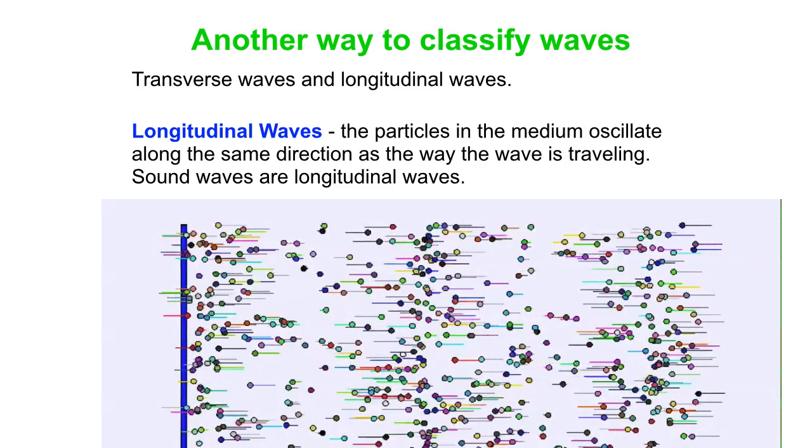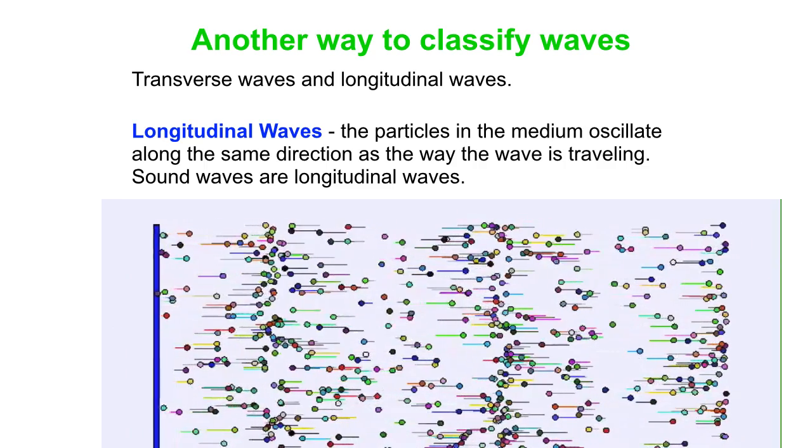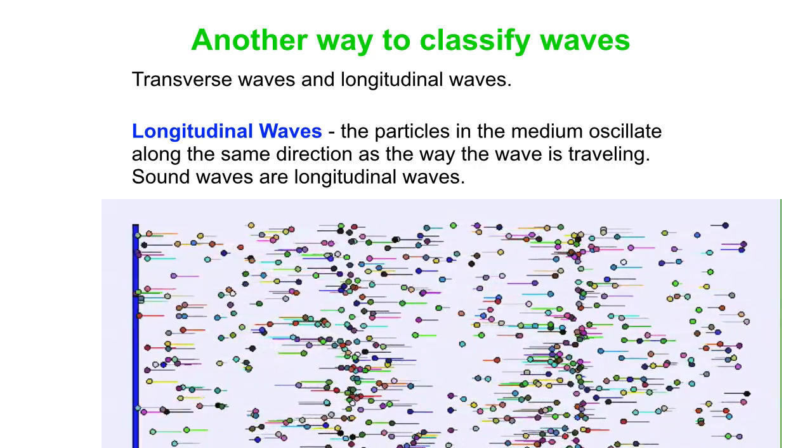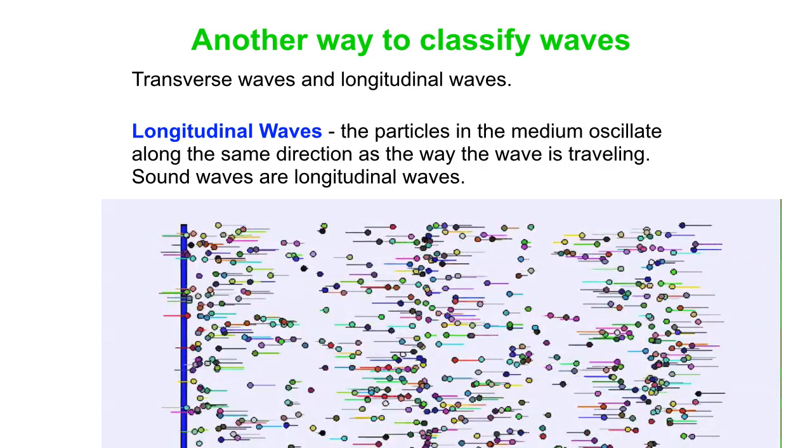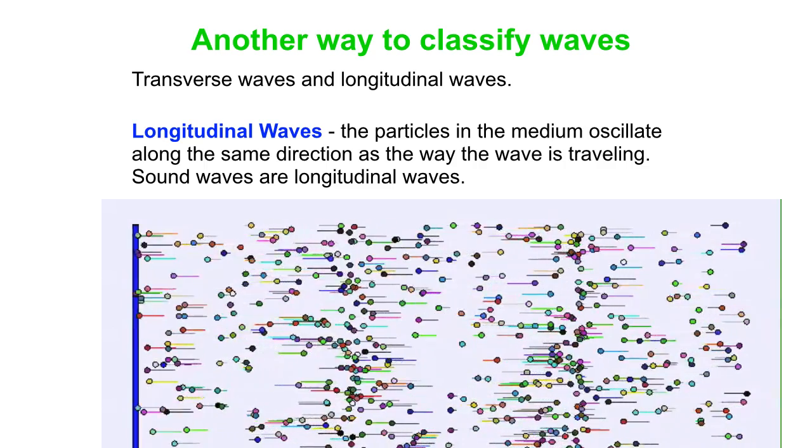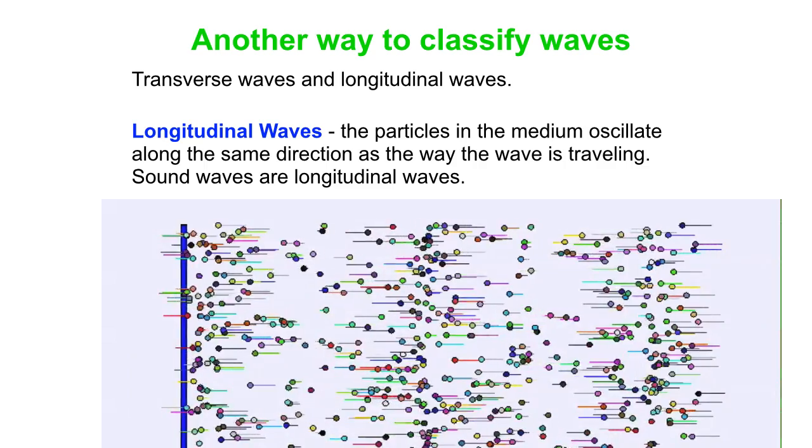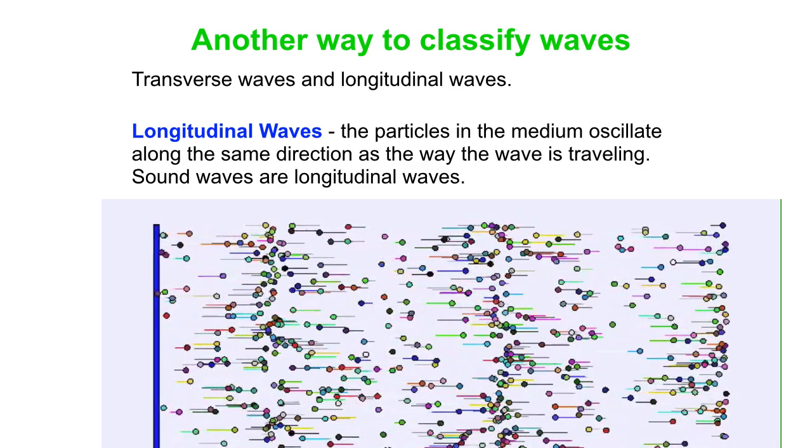Now, longitudinal waves, the particles in the medium oscillate along the same direction as the way the wave is traveling. A good example of a longitudinal wave is a sound wave. So once again the wave itself is traveling to the right. There is no net flow of particles to the right, but the particles in the medium oscillate back and forth, left and right, parallel to the way the wave itself travels.